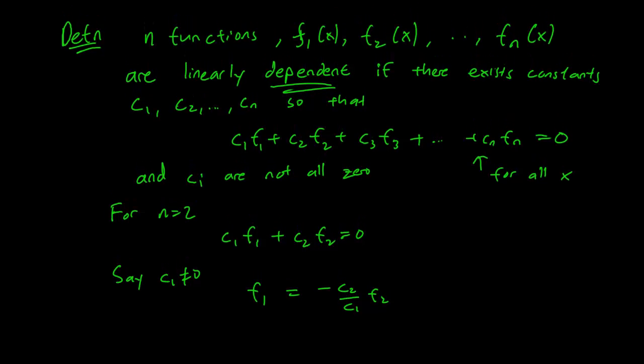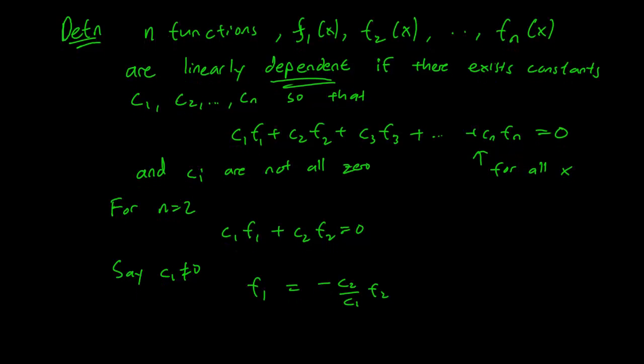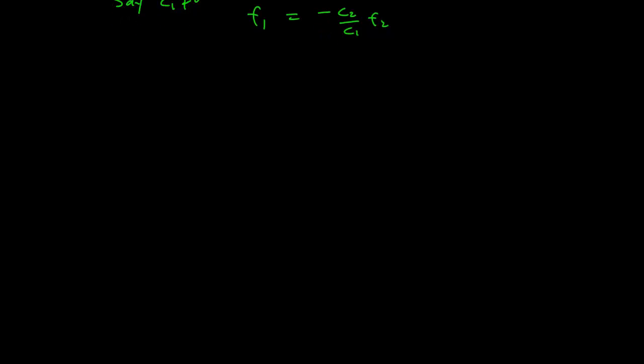So this is actually a really hard thing to check. Whereas in the second order case, the two functions case, you could just eyeball it and see that these two functions are linearly dependent or not, you really don't want to do that when you are dealing with more than two functions. The way to show linear dependence is through the Wronskian.